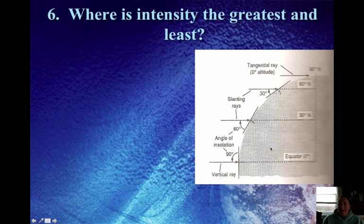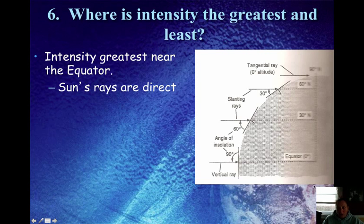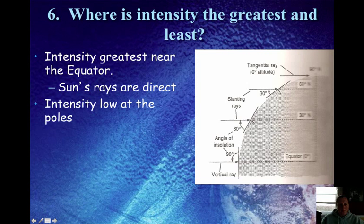So where would intensity on Earth be the greatest and the least? As we just said, when you're closest to the equator, you'll tend to have more direct rays of insulation, where as you get closer to the poles, that angle gets more slanted. So at the equator, the Sun's rays are direct, which means 90 degrees, or perpendicular to the surface.